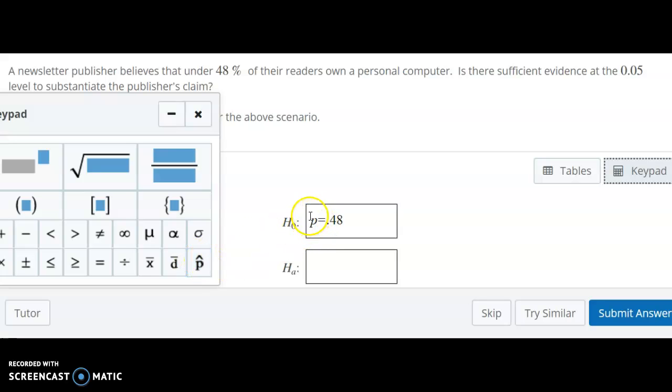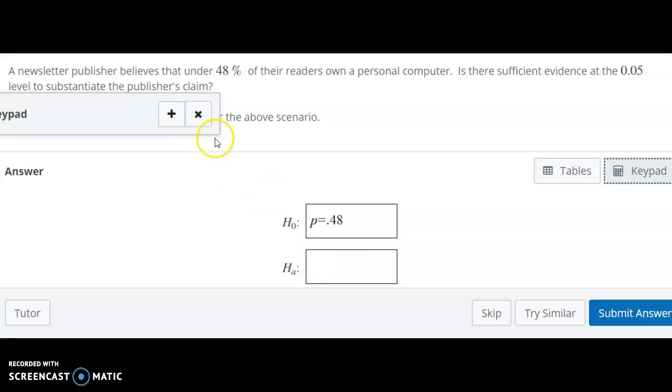It's important to notice there is a p here with a hat on it, and I'm putting the p without that. What's the difference? Well, this is the population proportion. It's a parameter. This is the sample proportion. It's a statistic. The null and alternative hypothesis are always talking about the parameters, about the things going on in the population. That's the big reason we're conducting the test here. That's why I'm using the p instead of the p hat.